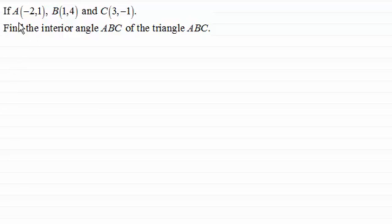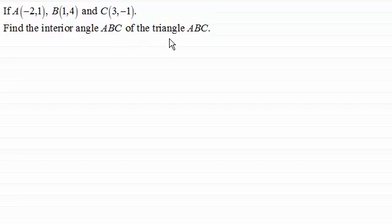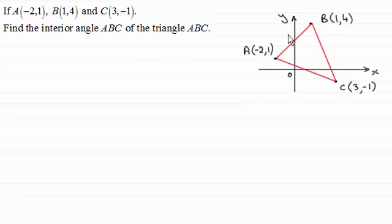What I've got here is a triangle with vertices A, B, C, where A has coordinates (-2, 1), B has coordinates (1, 4), and C has coordinates (3, -1). We've got to find the interior angle ABC. The first thing I would suggest we do is draw a sketch, something like this. The angle we have to find is this angle up here — I'll just mark it in as the angle theta.